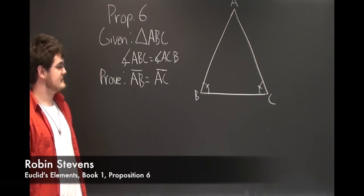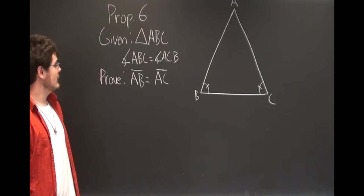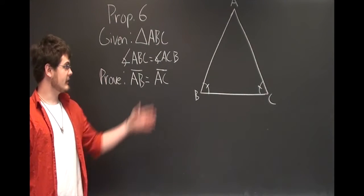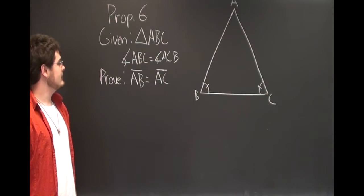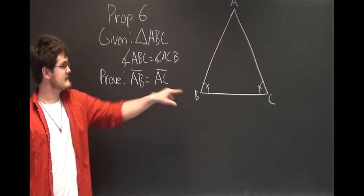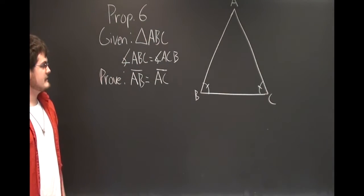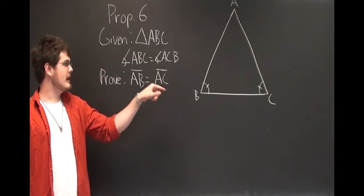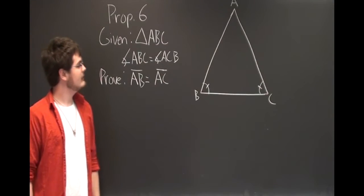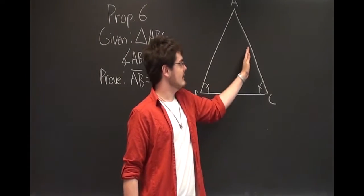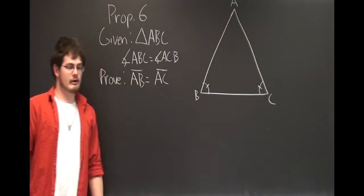All right, we're doing Prop 6. So what we're trying to prove here is that in our given triangle ABC, in which angle ABC is equal to angle ACB, that the sides subtended by those equal angles, namely AB and AC, are equal to one another.